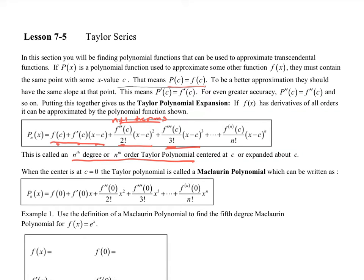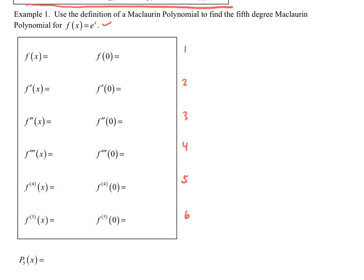When this is centered at c equal to 0 — like making a tangent line approximation at x equal to 0 — the Taylor polynomial is called a Maclaurin polynomial, written with 0 substituted in for c. It's a little cleaner. Now for an example: we want to find the fifth degree Maclaurin polynomial for f of x equals e to the x. Fifth degree means we'll end up with six terms.